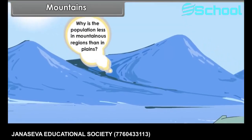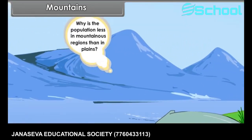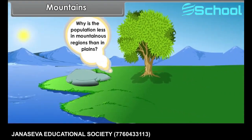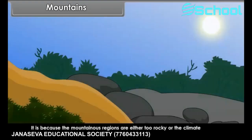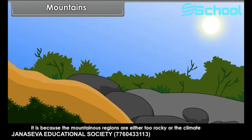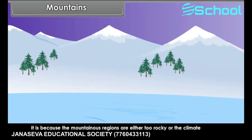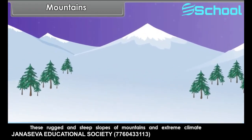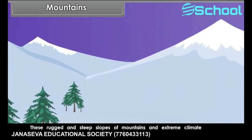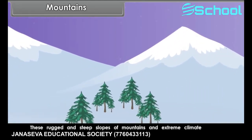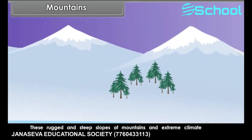Why is the population less in mountainous regions than in plains? It is because the mountainous regions are either too rocky or the climate too dry, too hot, too wet, or too cold. These rugged and steep slopes of the mountains and extreme climate conditions impose restrictions on land for human use.